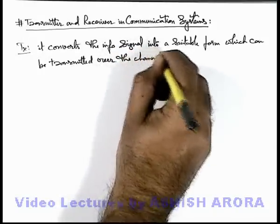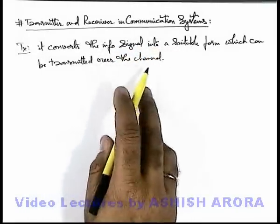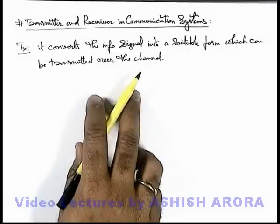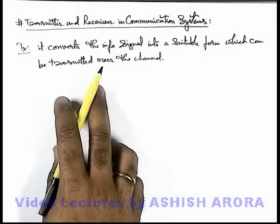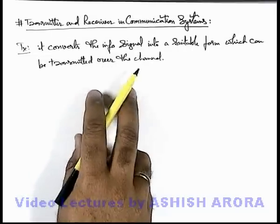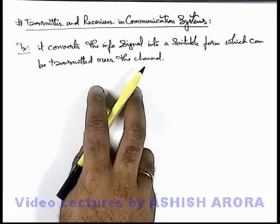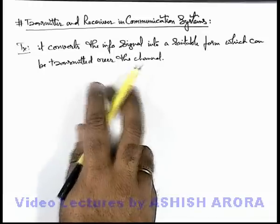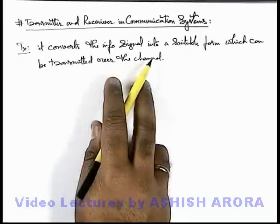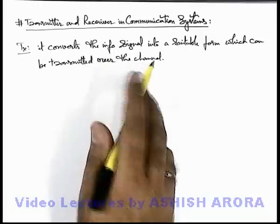As we have discussed in the previous section, the channel cannot transmit directly the information signal. It requires a specific form of information signal which is converted by the transmitter and then it is transmitted over the channel.